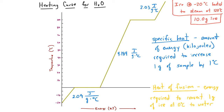Another definition we need is the heat of fusion. The heat of fusion is the energy required to convert 1 gram of ice at 0°C to water at 0°C. That value for water is 334 joules per gram. Notice there's no degree Celsius component because during this process the energy goes directly into converting ice to water — there is no temperature change.